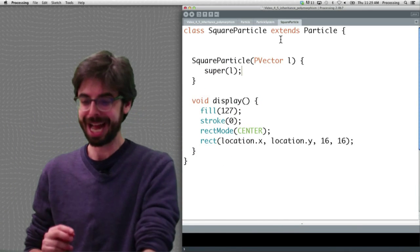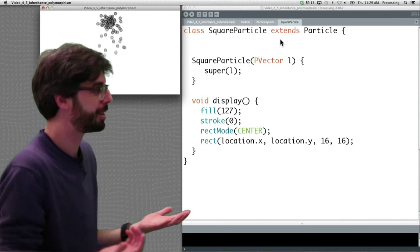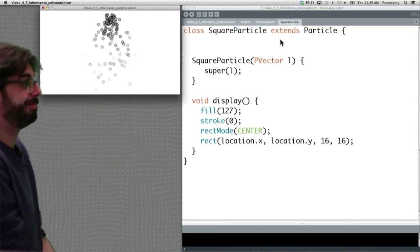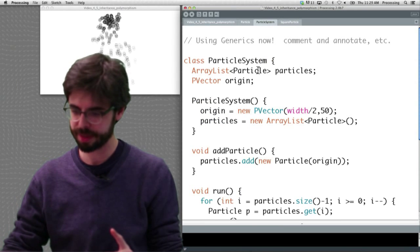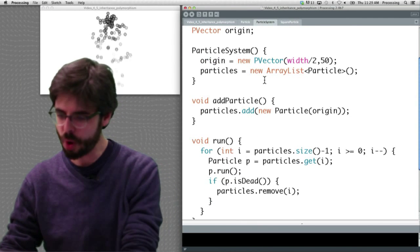So now that we have this, hopefully we didn't make any mistakes. I can hit run, compiles, it runs, and we see our particles there. It's the same, but let's go look at our particle system class, and let's just change one thing.